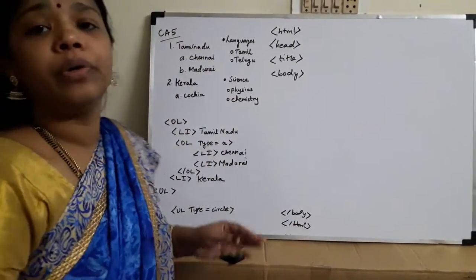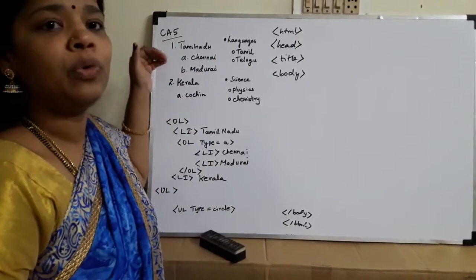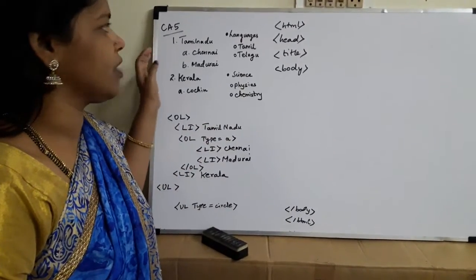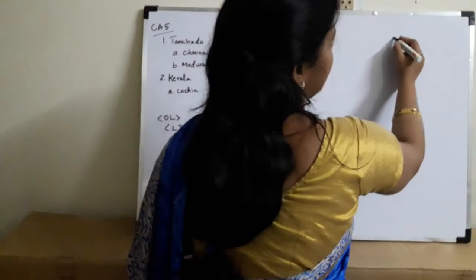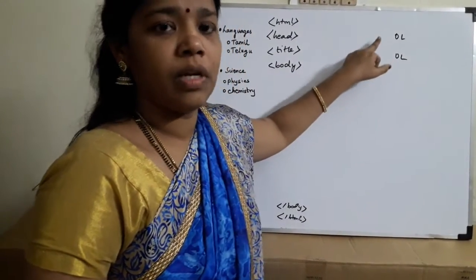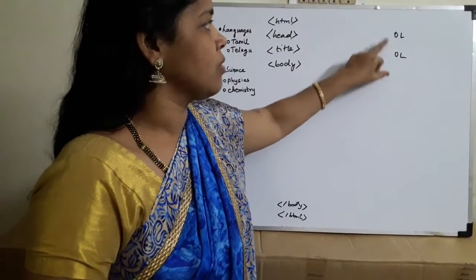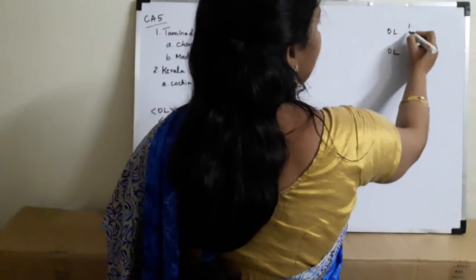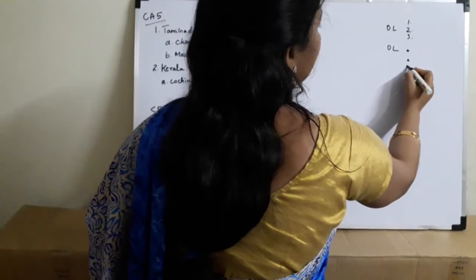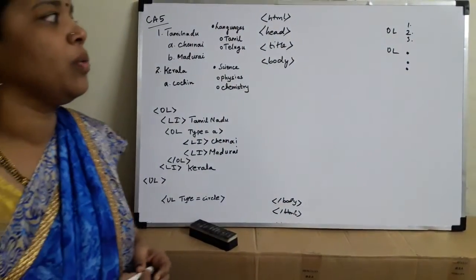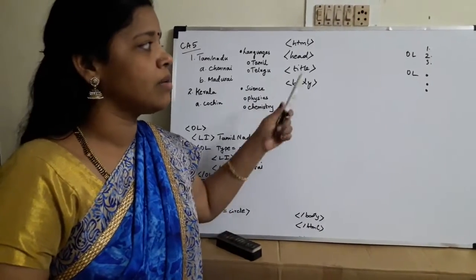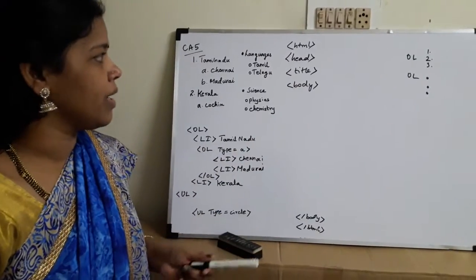Now we are going to create a list. A list is where we list content one by one, one below the other. The items written this way are called a list. We have different types of lists: one is the ordered list, denoted by OL, and another is the unordered list, represented by UL. OL means the items will be listed with numbers, and UL means the items will be displayed with dots.